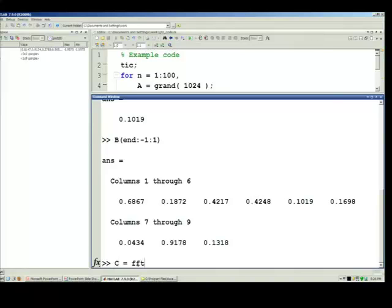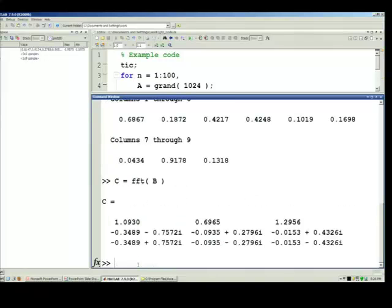So you can then do functions like FFT. So we took, now C becomes a complex G single because the FFT of that random matrix happened to be complex.